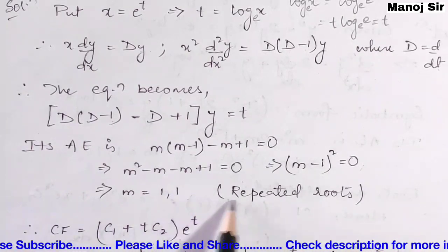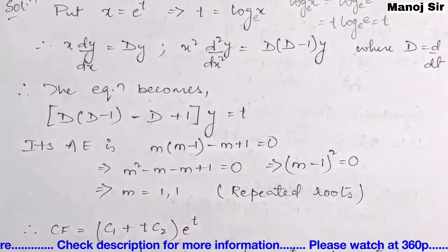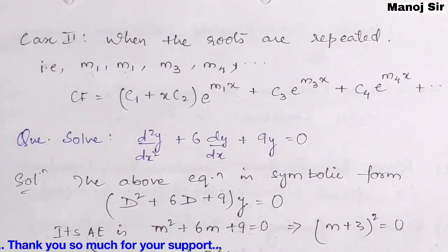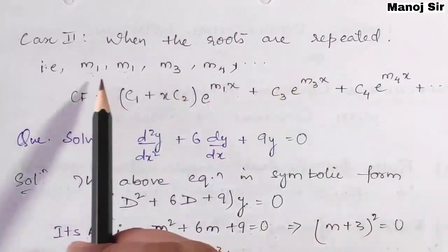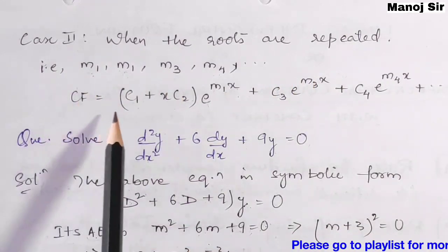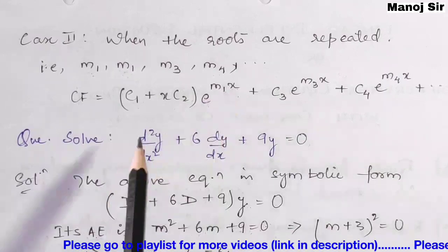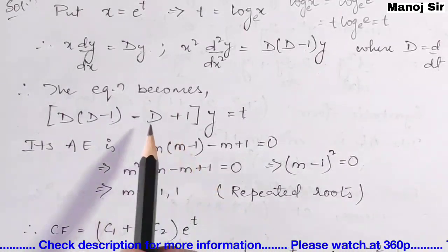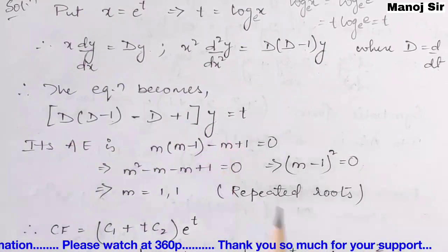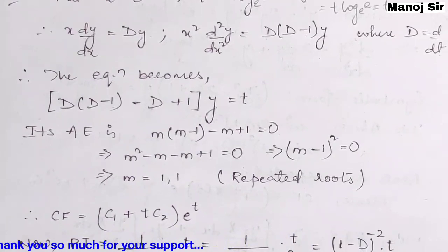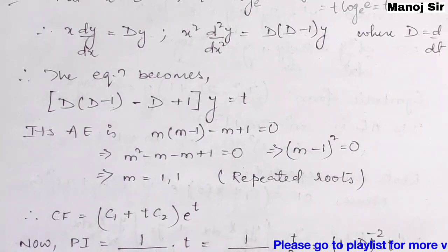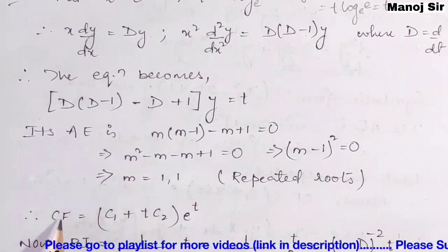The roots are repeated: m equals 1, 1. When roots are repeated — that is m₁, m₁ — the complementary function is CF equals (c₁ plus t·c₂) e^(m₁·t). Since our equation is a function of t, we write CF equals (c₁ plus t·c₂) e^t.